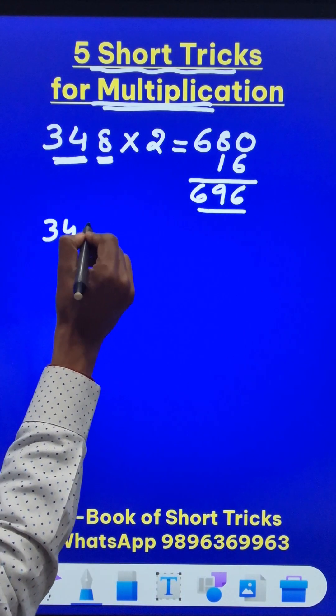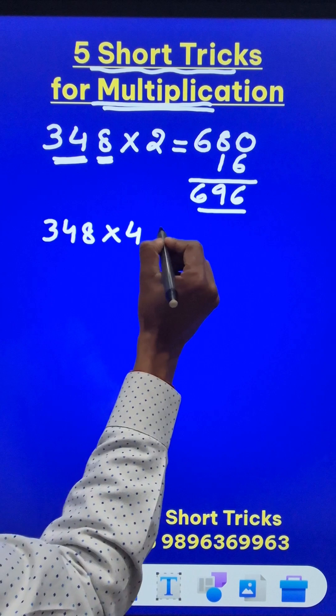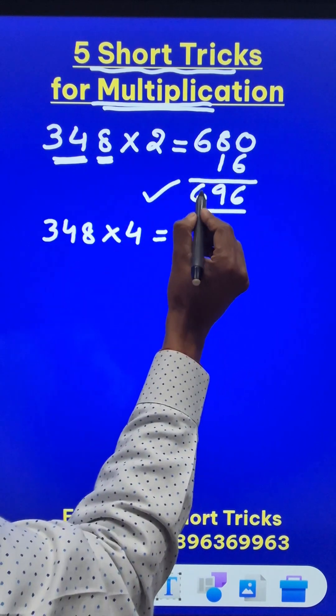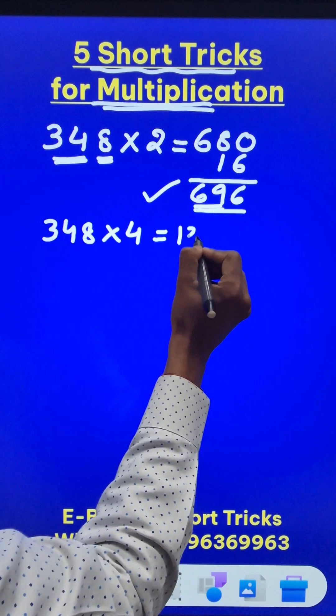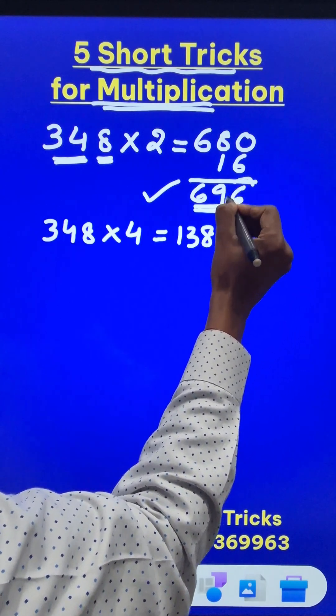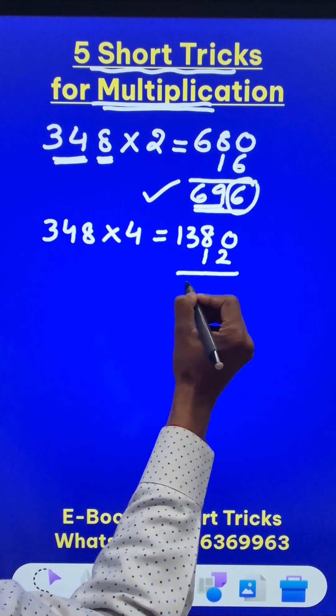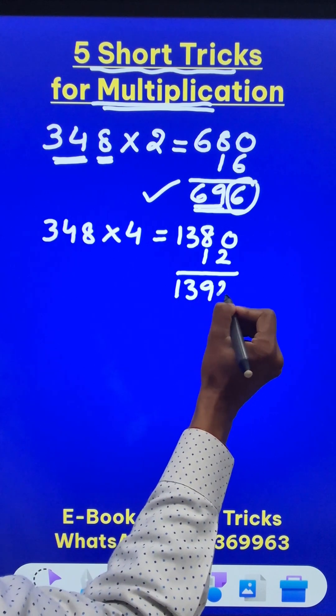Now suppose the same number 348 is to be multiplied by 4. You already multiplied it by 2 and you got 696. The double of 69 is 138. So put a 0 and add double of 6 that is 12 to the result, you get 1392 as the answer.